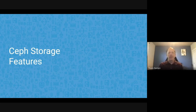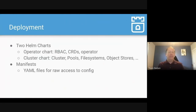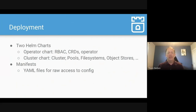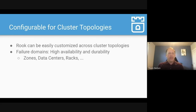Thanks Alexander for the introduction to Rook. We love providing this platform so you can have storage in your Kubernetes clusters. For deployment, there are YAML files you can create to specify your desired state, and there are two Helm charts: one installs the operator and related resources, the second installs all of Rook's CRs — letting you create a cluster, block pools, Ceph file systems, and Ceph object stores.